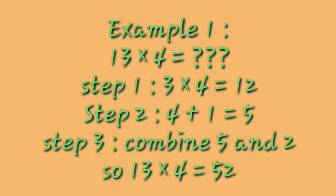Let us understand with an example — suppose you have to find out 13 times 4. In step 1, multiply 3 by 4: 3 times 4 equals 12. In step 2, add the multiplier 4 with the tens digit of 12, which is 1: 4 plus 1 equals 5. In step 3, combine this 5 with the 2 of 12: you get 52. So 13 times 4 equals 52. You can take more examples to clarify this concept further.